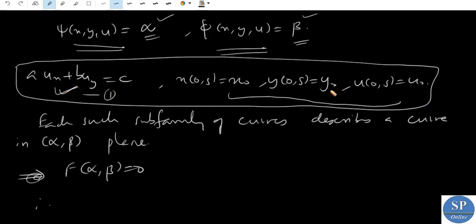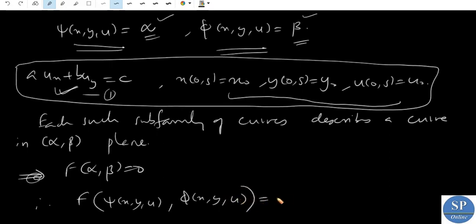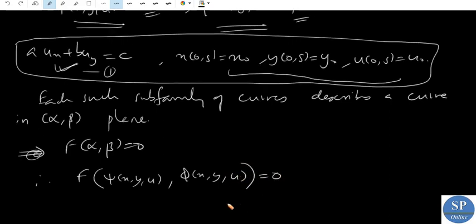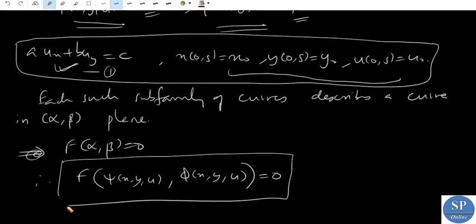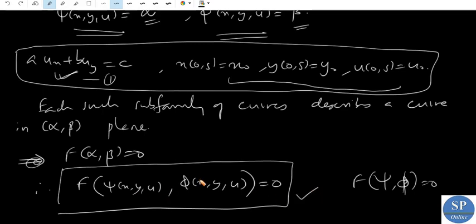The quasi-linear PDE along with the initial condition has a solution that can be expressed as f(ψ, φ) = 0, where ψ and φ are functions of x, y, and u. So this defines a general solution for the given PDE.